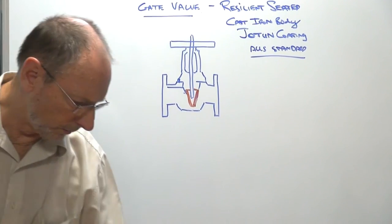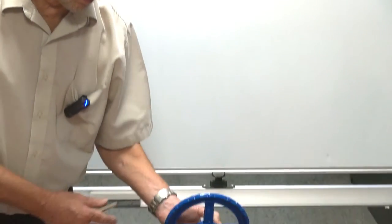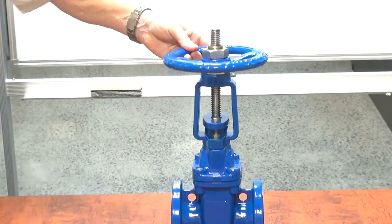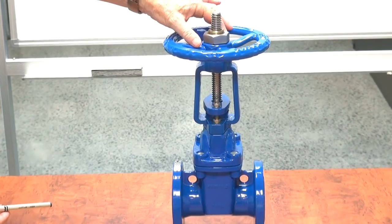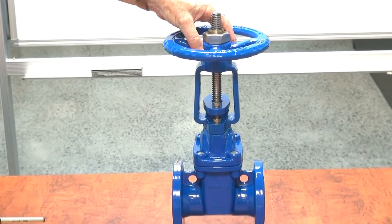I'll show you the actual unit itself. Here is a 50mm unit here. We've got the operation of the hand wheel just at the top.